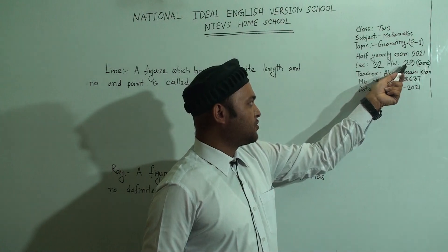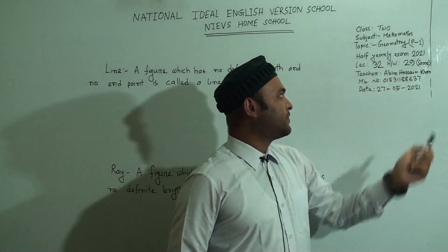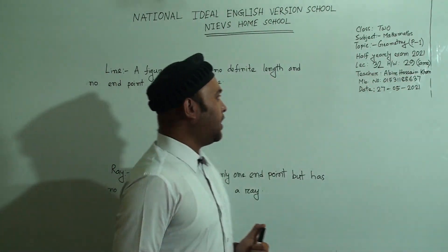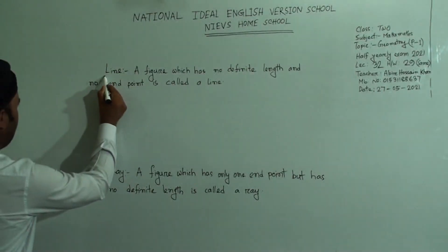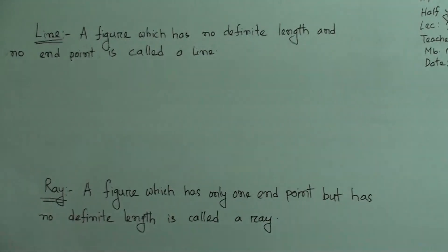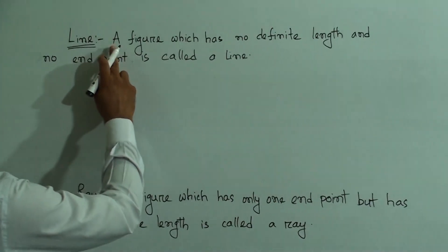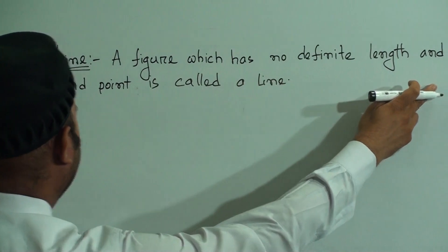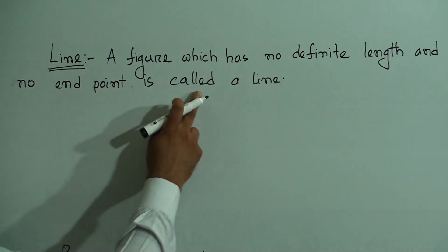Today we learn two definitions: line and ray. First one — line. A figure which has no definite length and no end point is called a line.